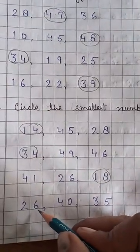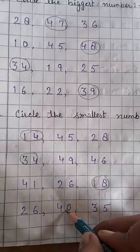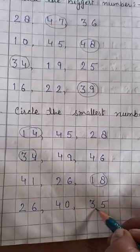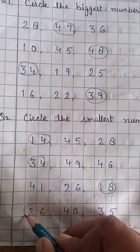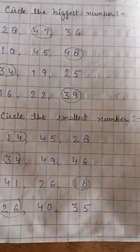The next one is 26, 40 and 35. Which one is smallest? 26. Very good students.